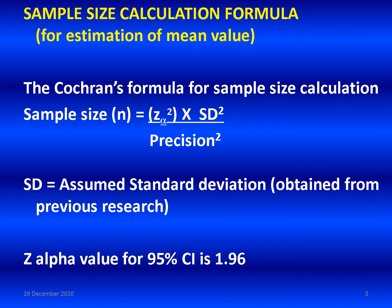Now we can see the sample size calculation formula for estimation of mean value using Cochrane's formula. Sample size is equal to Z alpha squared multiplied by standard deviation squared, divided by precision squared.